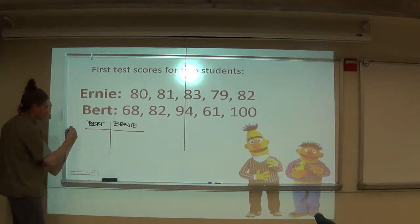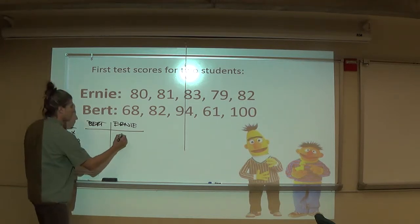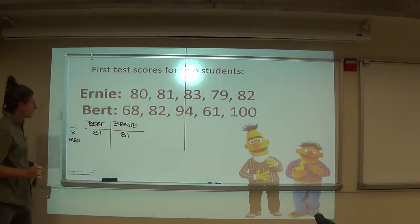You calculated their average, you calculated their median. Let's see what their averages were. Ernie's is 81 for sure. And Bert's is 81. And Bert's is 81 exactly? Yeah. Thank you guys. So you said, well, average are the same. Cool.